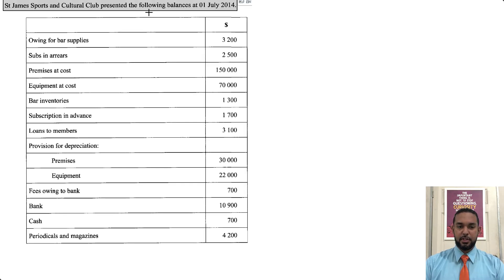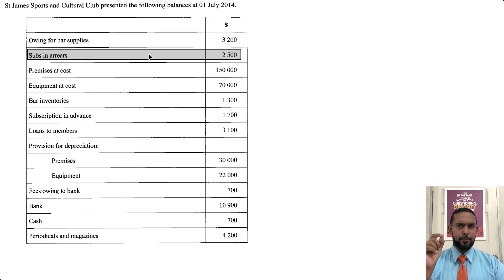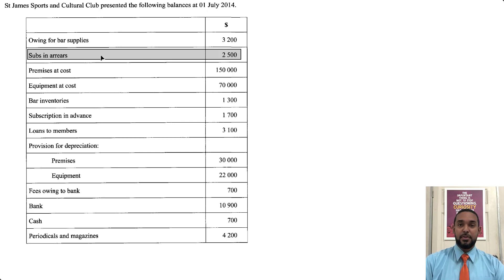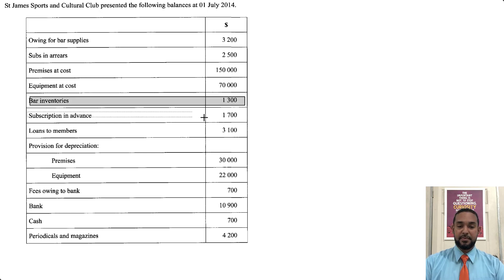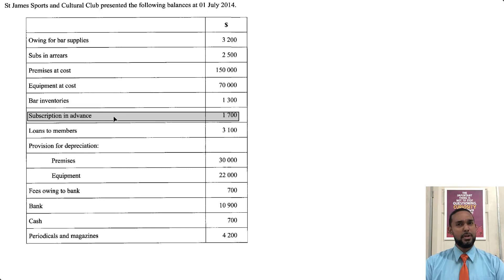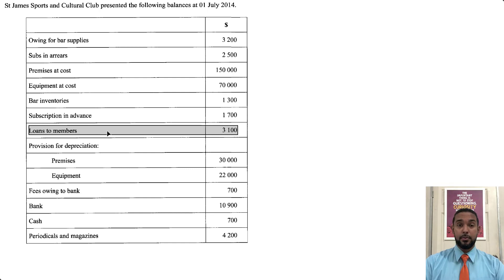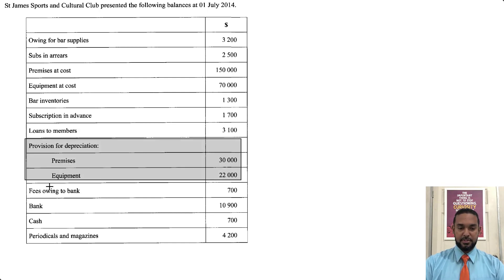St. James Sports and Cultural Club presented the following balances at 1st July 2014. We have owing for bar supplies — that's a liability. Subscriptions in arrears: subscriptions is revenue for non-profit organizations, and if it's in arrears, that's a receivable, that's an asset. Premises is an asset, as is equipment, as are bar inventories. Subscriptions in advance: if they prepaid, that's a liability. Loans to members: if you lend somebody money, they owe it to you — that's an asset. We have provision for depreciation on premises and equipment.